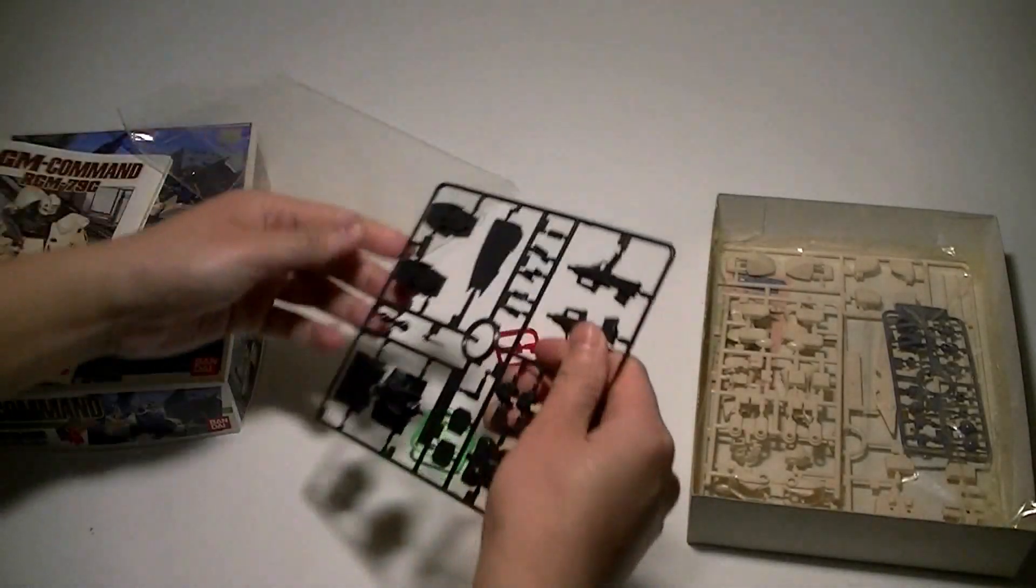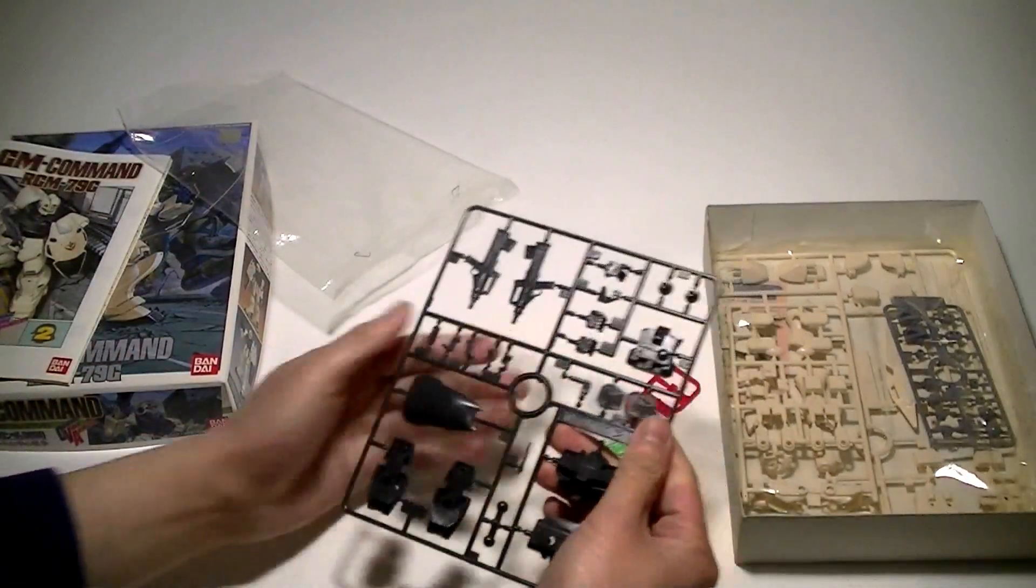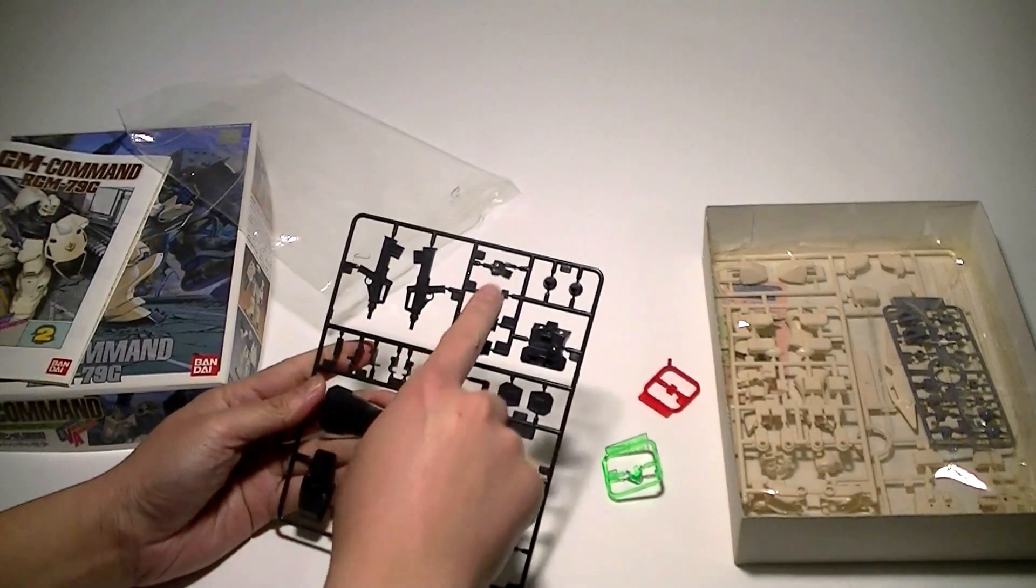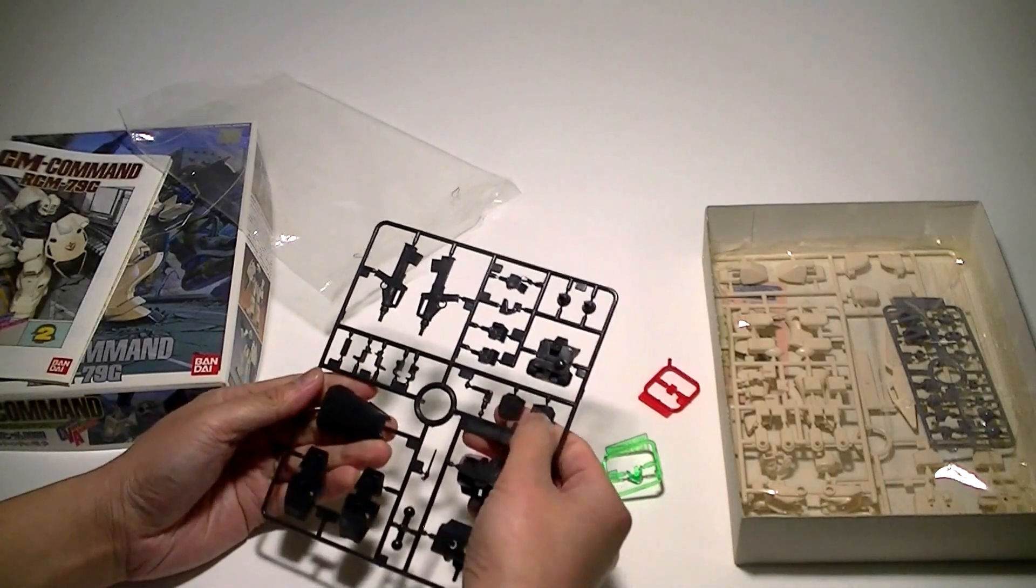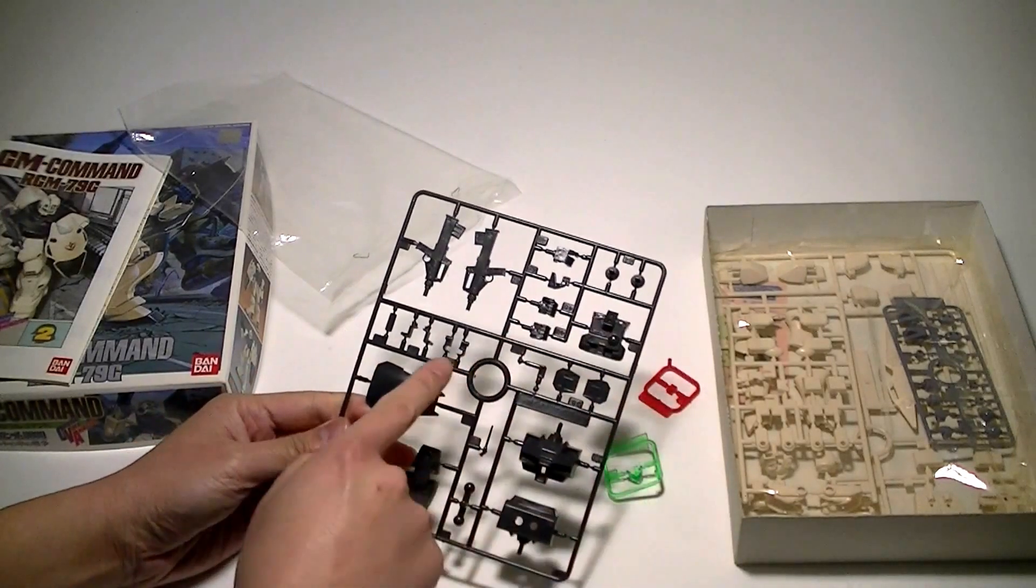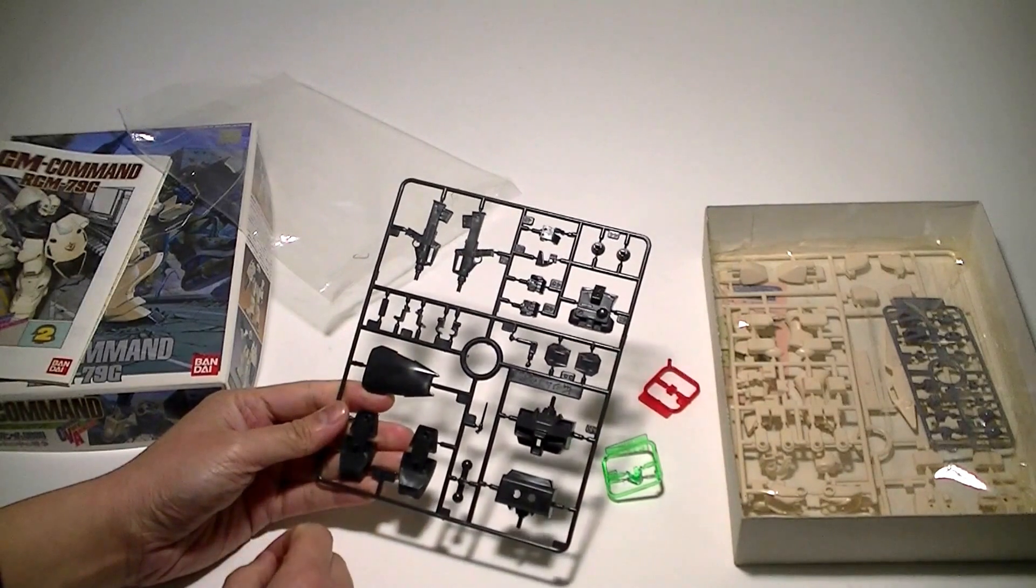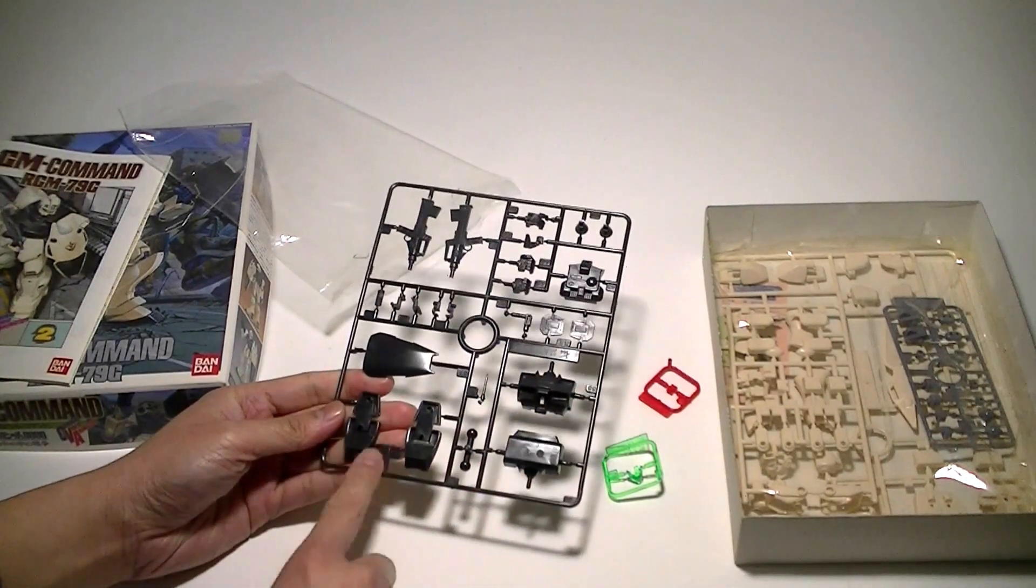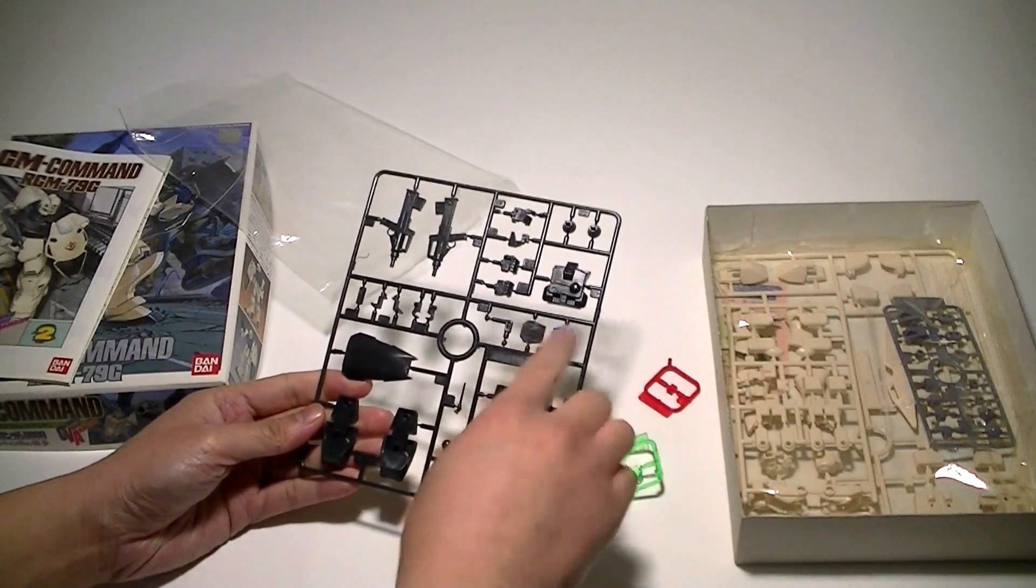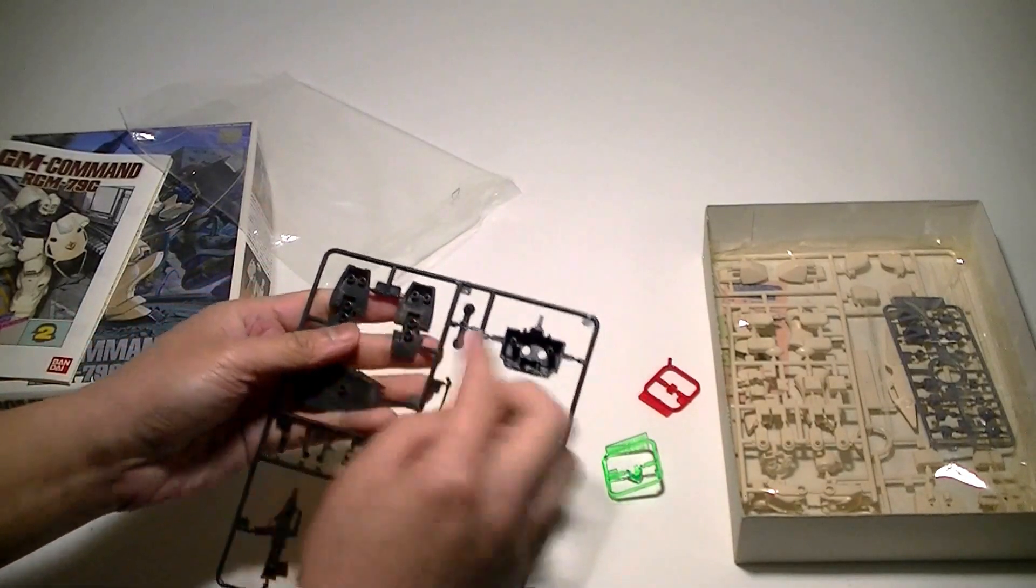What we've got here is, of course, machine gun, hands, a backpack, some thrusters, parts for the feet, some clips for the hip armor, bottom portion of the shield, chest, and feet. These will pop on right on the bottom of the feet.